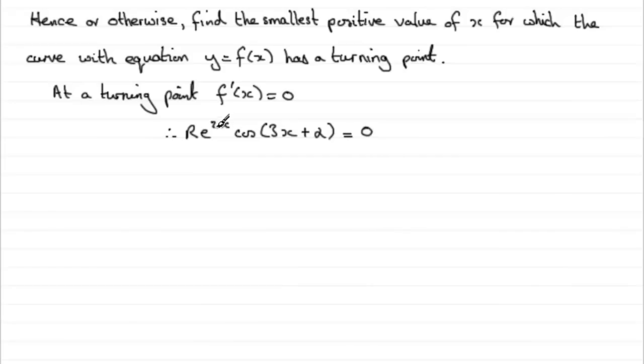So if we've got something like this that equals 0, it's factorized. It can't be r that equals 0, and it can't be e to the 2x that equals 0. It's got to be the cosine of 3x plus alpha that equals 0. So therefore, cos of 3x plus alpha must equal 0.